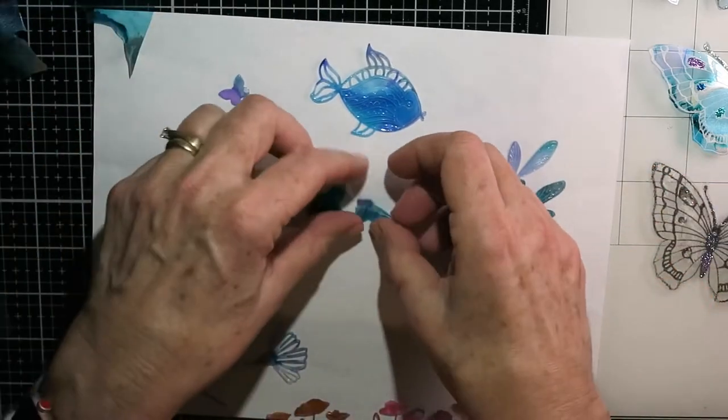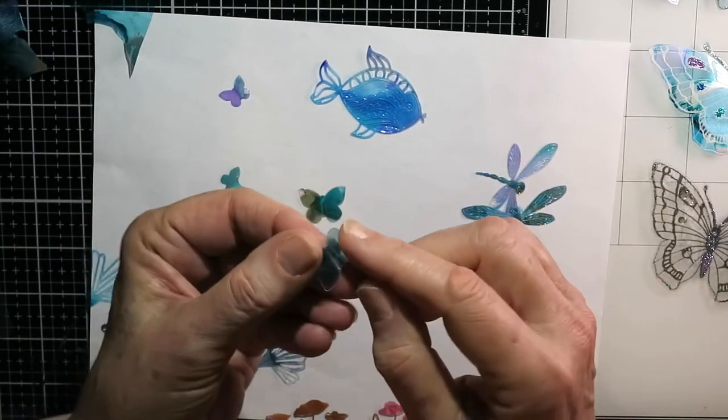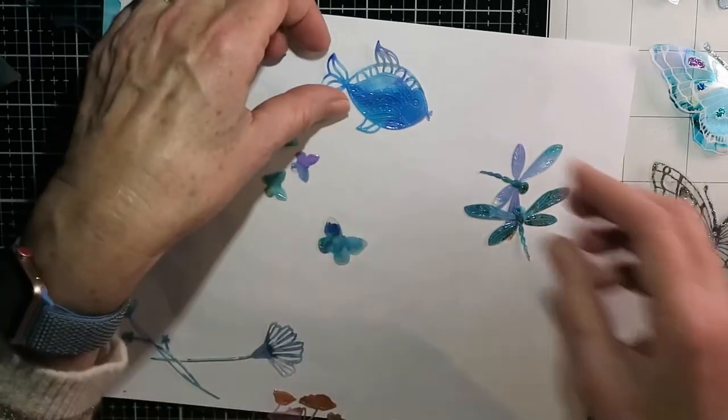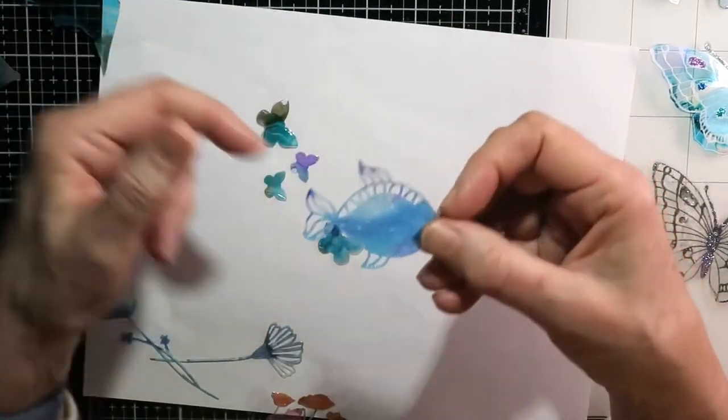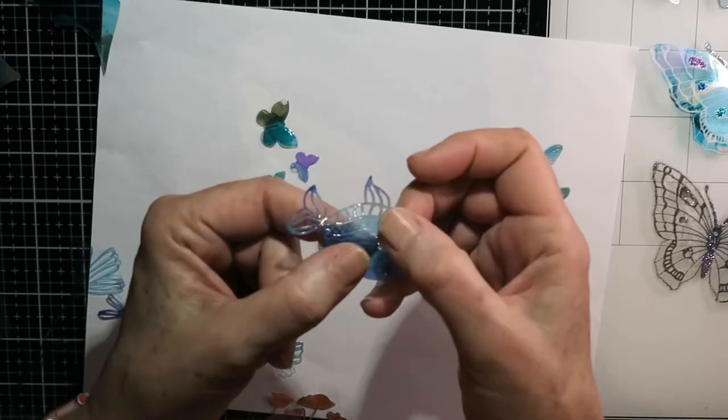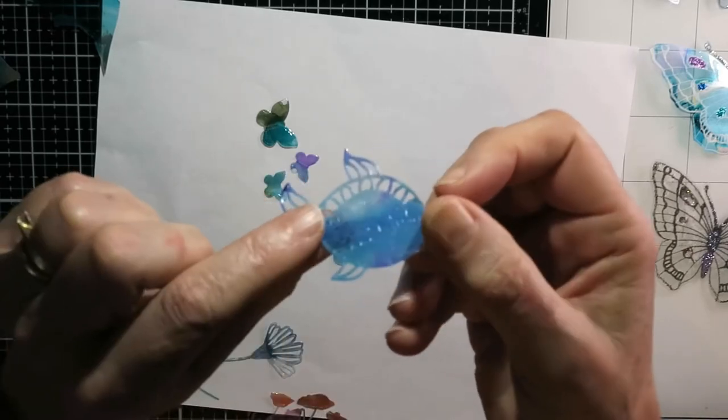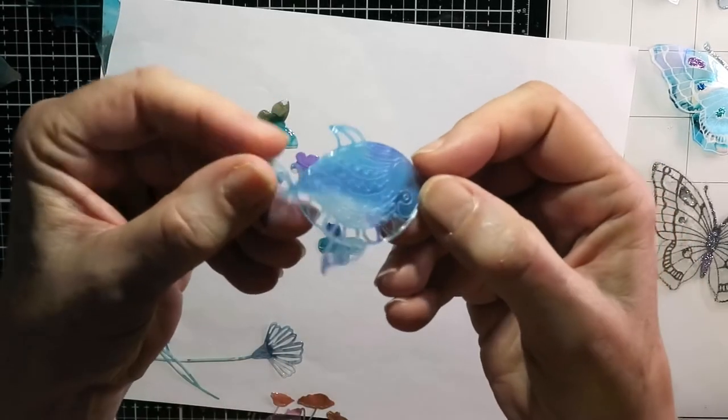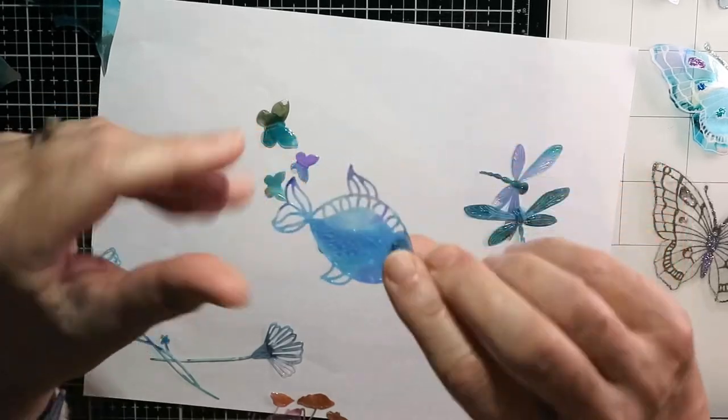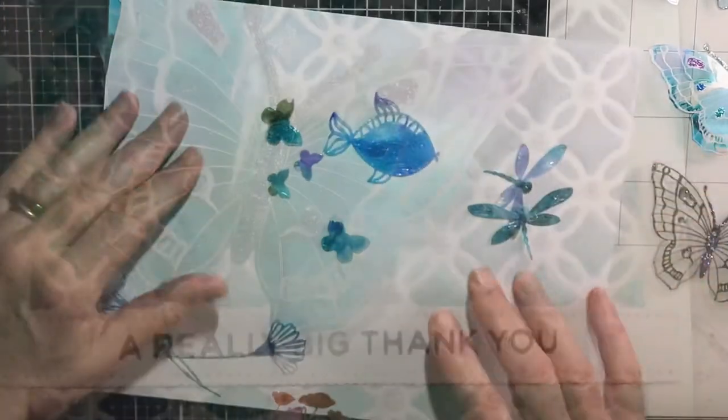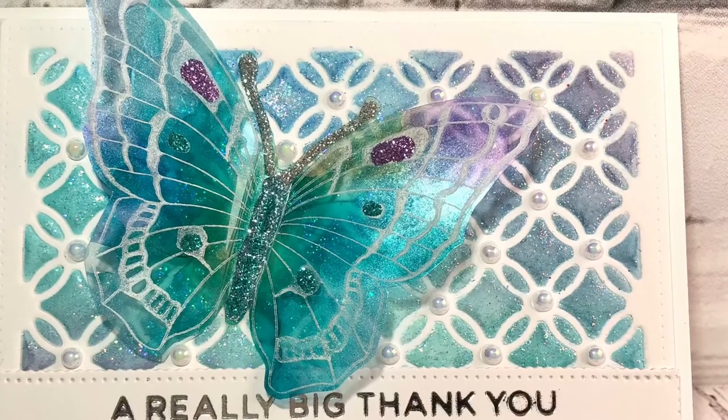So those little scraps, I saved those for these. I've got these lawn fawn little butterflies, and they're kind of fun to cut from those extras. This little fish was from Penny Black. Now, really, all those pieces come out, but I love the look of it all together, and I just, I haven't figured out quite what I'm going to do with it yet.